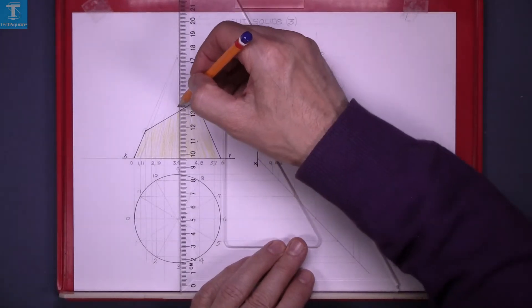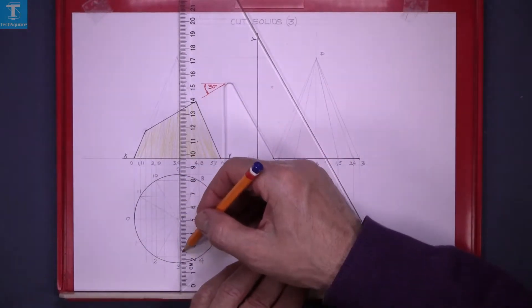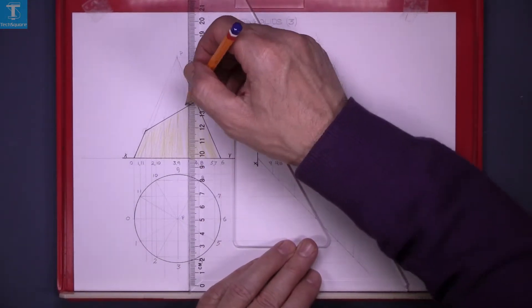Now this center one we can't find the point on the generator down here because it's vertical, so we have to find that from the end view.